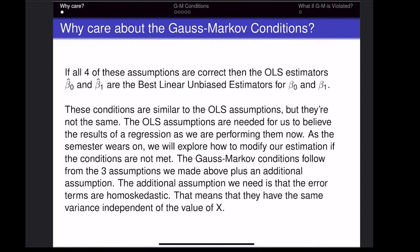The Gauss-Markov conditions basically take the three simple linear regression OLS assumptions and add one more. The additional condition is that the error terms are homoscedastic, meaning the error has the same variance independent of the value of your x variable.